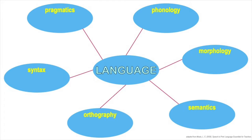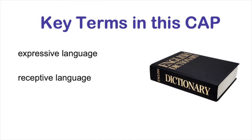Here's a graphic organizer for the systems of language and how they relate to literacy. The six circles on the ends of each spoke are the systems that make up English, as well as other languages. By the end of this video, you should be able to complete this graphic organizer with definitions for each system. Before we define those systems, let's define a couple of other important key terms first: expressive language and receptive language.